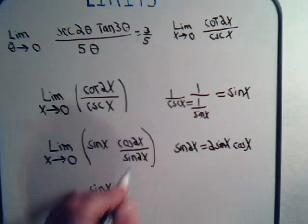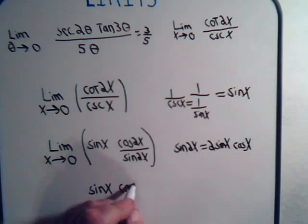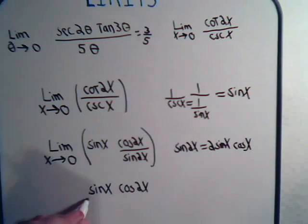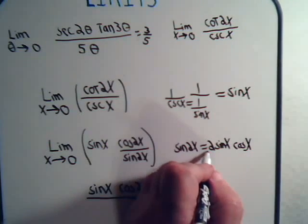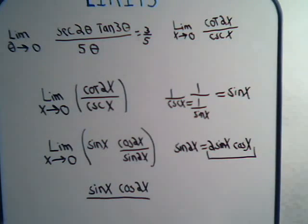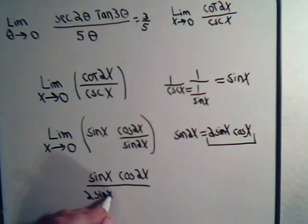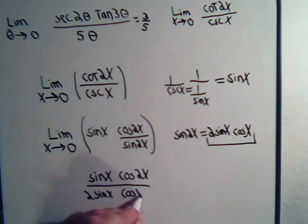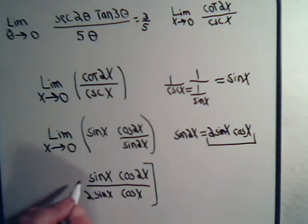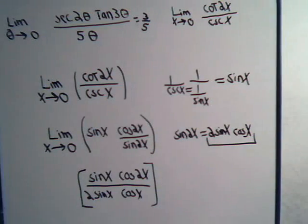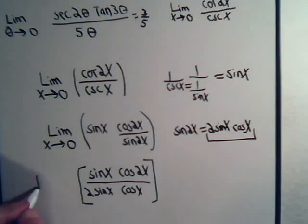Now we're going to have sine of x times the cosine of 2x divided by 2 times the sine of x times the cosine of x. And we want the limit as x goes to 0.